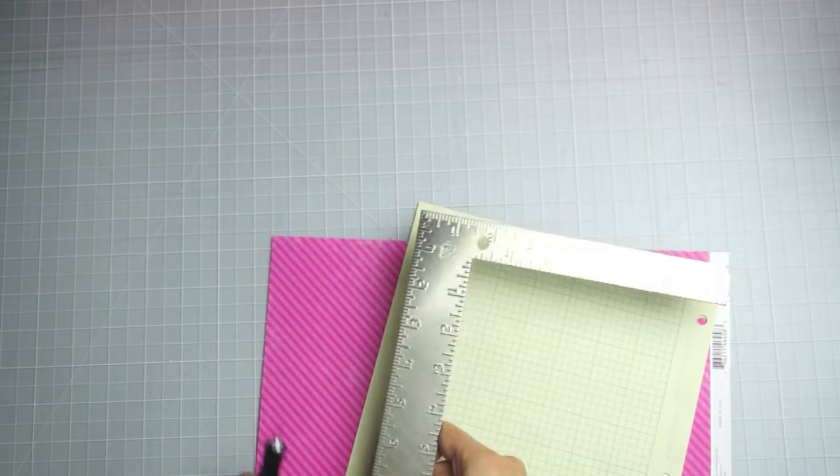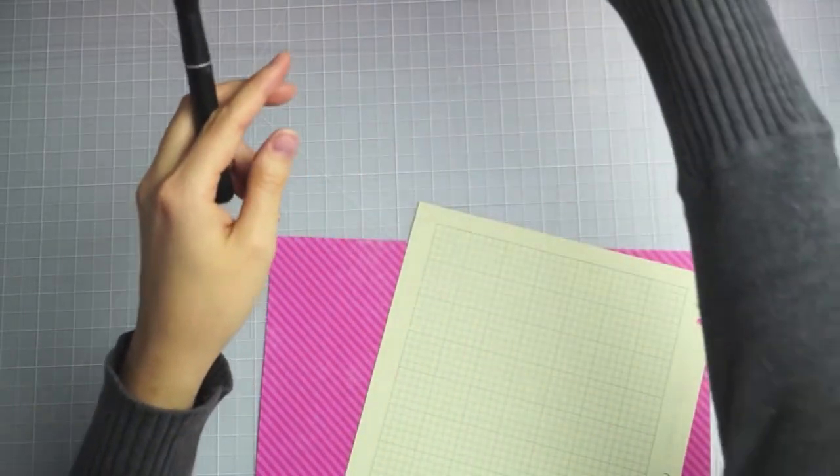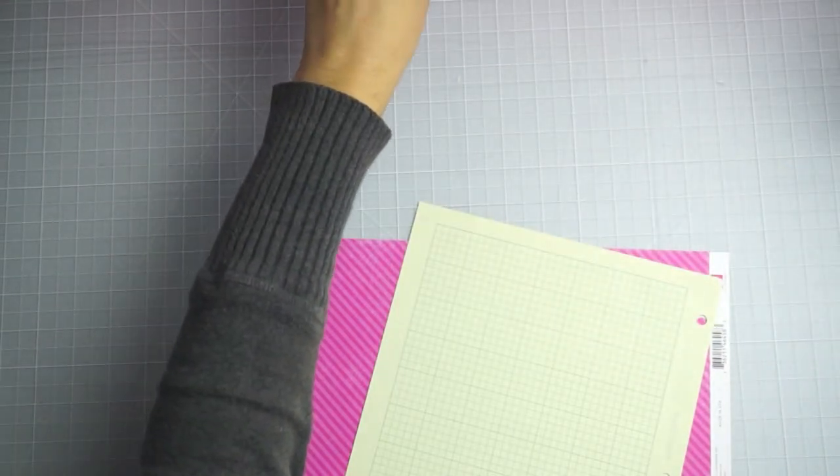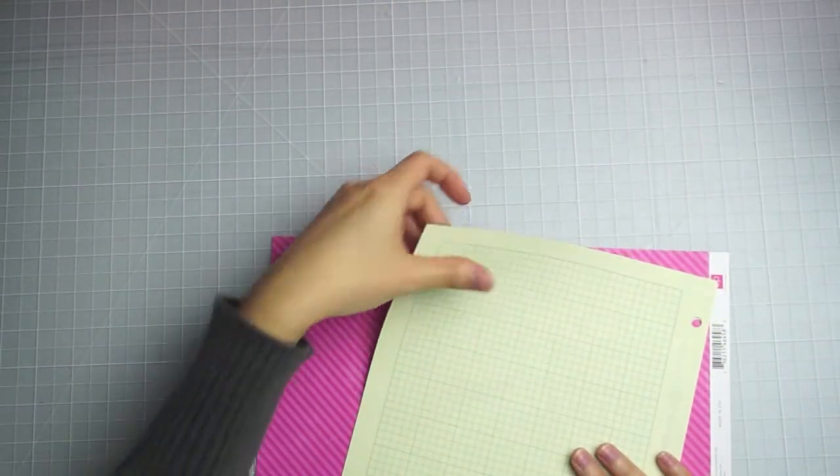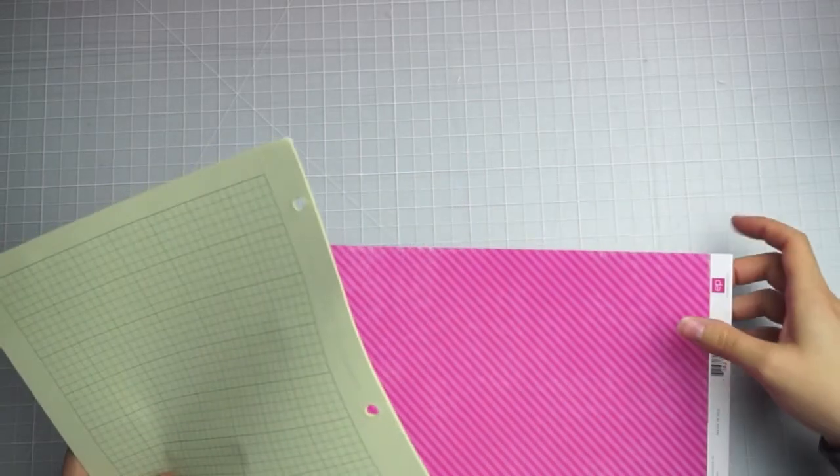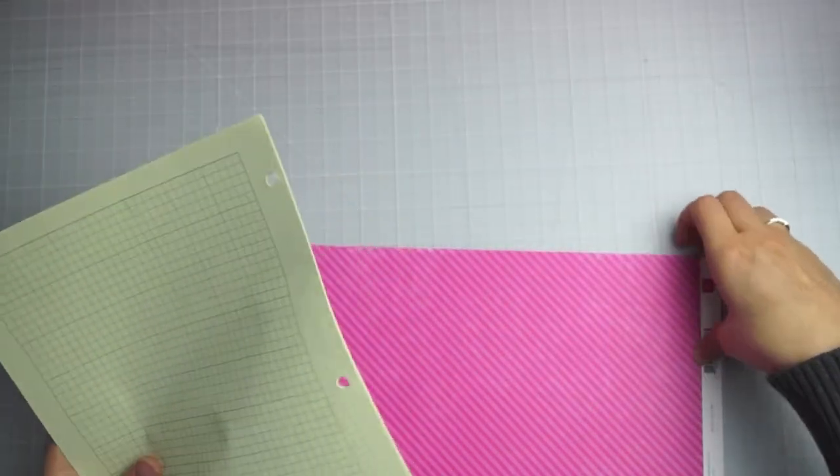So I just lined it up where I wanted to cut and then cut, and then I also just used my paper trimmer. I was able to use my paper trimmer for this thinner paper and I needed to use the ruler and exacto knife technique for the thicker white cardstock notebook. So you can use either method that you prefer.